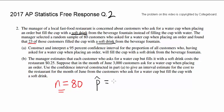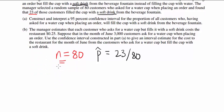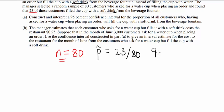We have p-hat which is the sample proportion, 23 out of 80. Part A: construct and interpret a 95% confidence interval for the proportion of all customers who, having asked for a water cup when placing an order, will fill the cup with a soft drink from the beverage fountain. Let's start by looking at the requirements for the test and making sure all of them are satisfied.